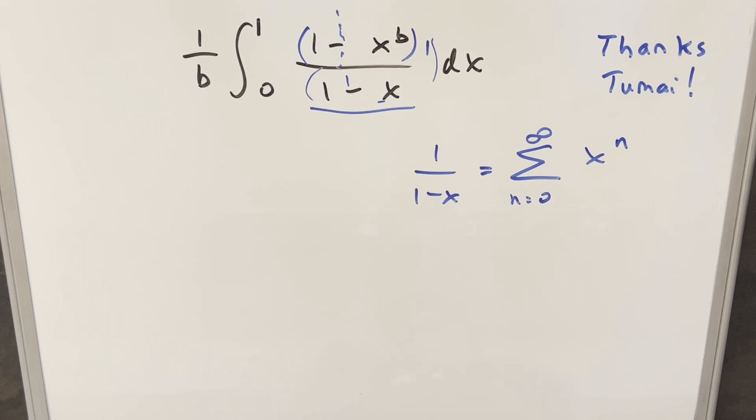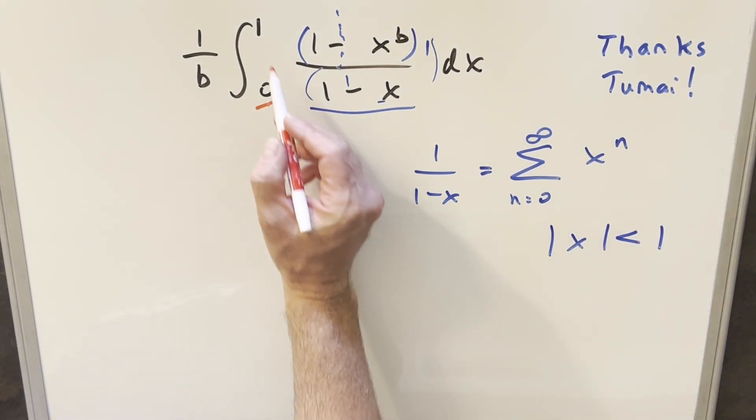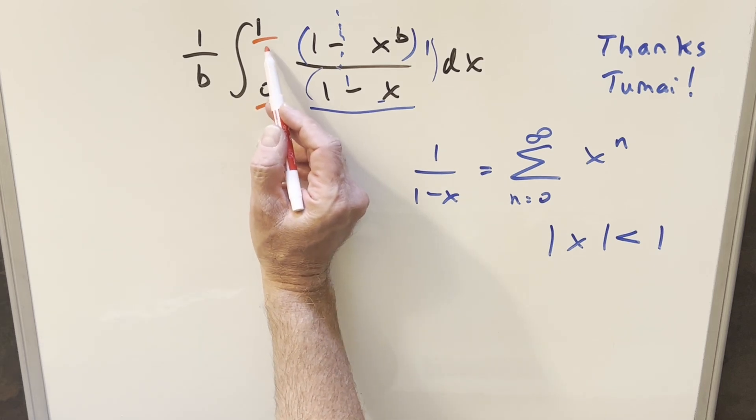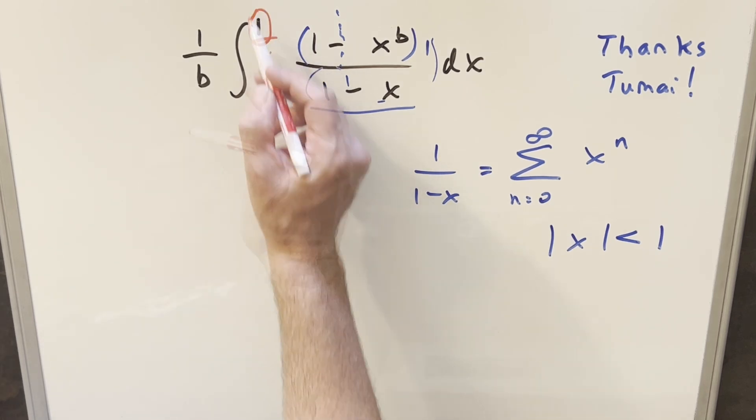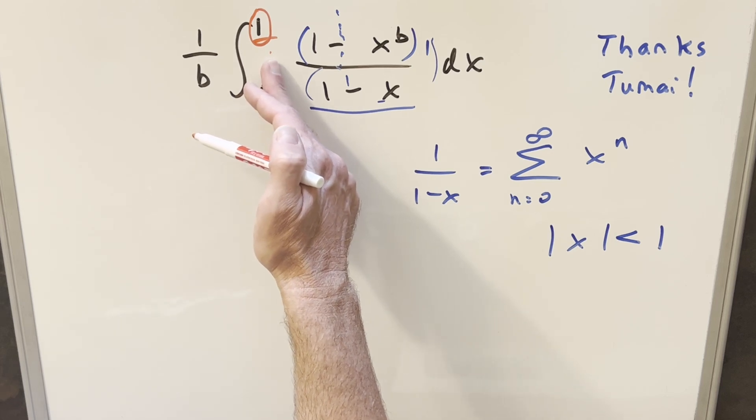Now we do have an important condition on this for convergence. We need the absolute value of x to be less than 1. But in this case, that's no problem because our integral is going from 0 to 1. Technically you have a problem at 1, but with an integral we don't really care what happens at the endpoints. We just think about the 1 as if we're approaching 1.